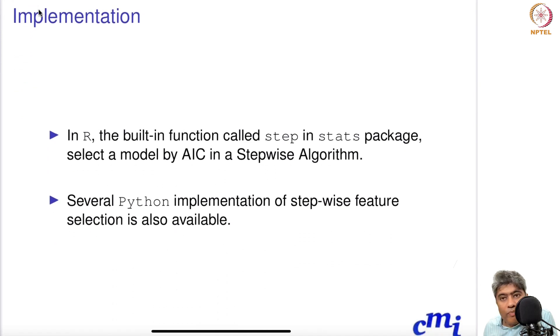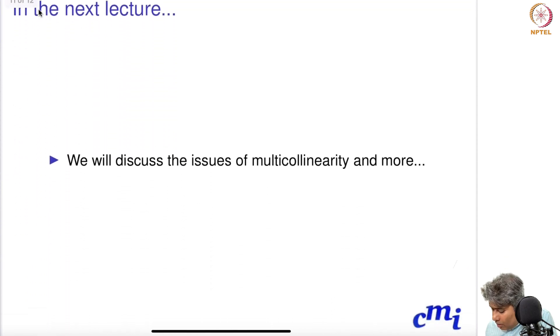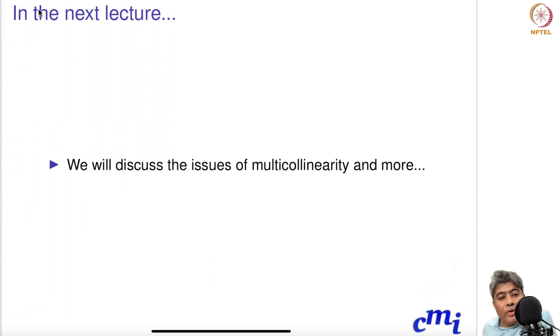For implementation, in R, there is a built-in function called step in the stats package. You just have to mention select model by AIC in stepwise algorithm. You say forward, backward, or both, and it will do the stepwise selection for you. Several Python implementations of stepwise feature selection are also available. In the next video, we will discuss the issues of multicollinearity and so on. Thank you so much. See you in the next video.